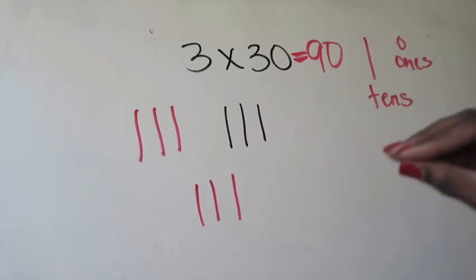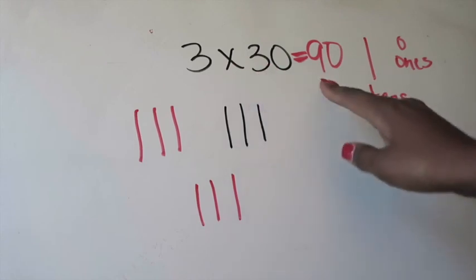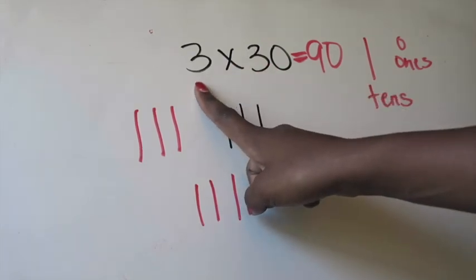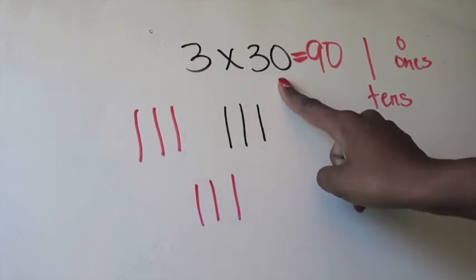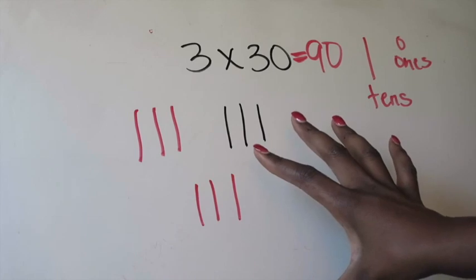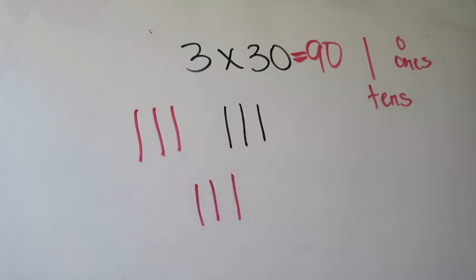So the product based on my model of 3 times 30 is going to be 90. So that's option one. Look at your problem. Model it out. Your first factor is going to tell you how many groups you have and your second factor is going to tell you how many do you need in each group. Once you've modeled that, you're going to count how many you have in all and that will end up being your product.